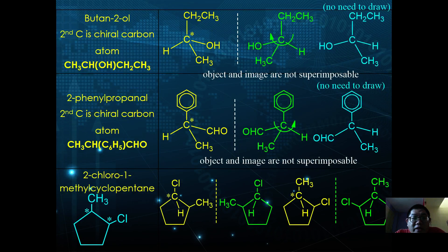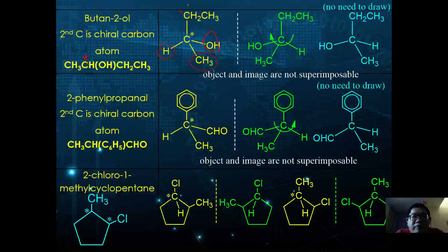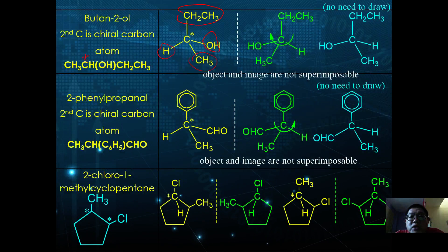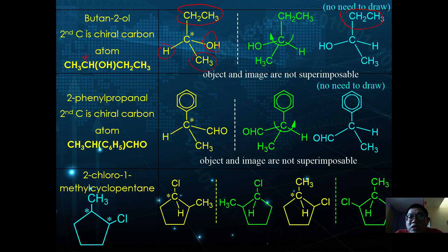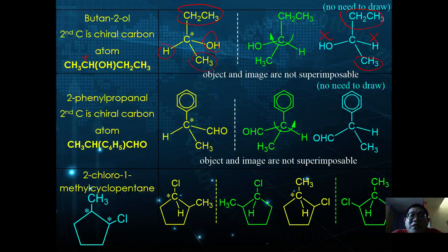For butan-2-ol, the second carbon is a chiral carbon atom. It is surrounded by OH, H, CH3, and CH2CH3. When reflected and rotated 180 degrees, the OH and H groups are non-superimposable. Since it is not superimposable, we identify this as a chiral carbon atom and describe butan-2-ol as exhibiting optical isomerism.